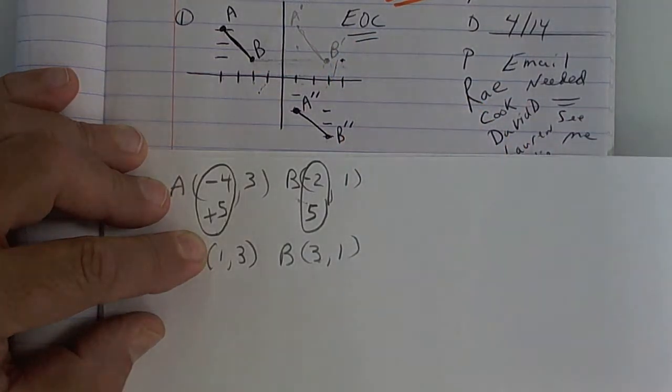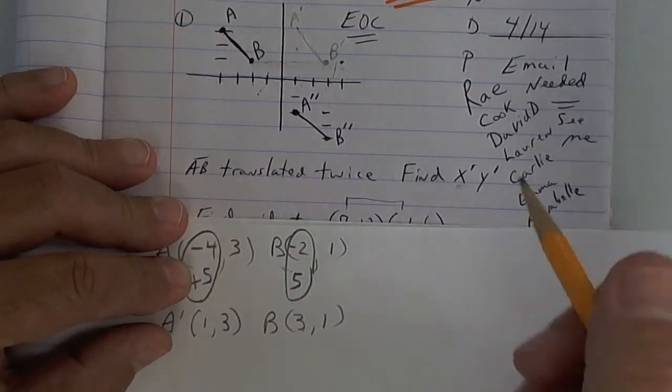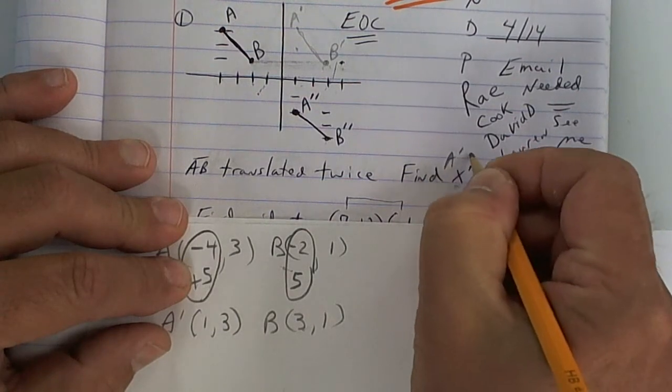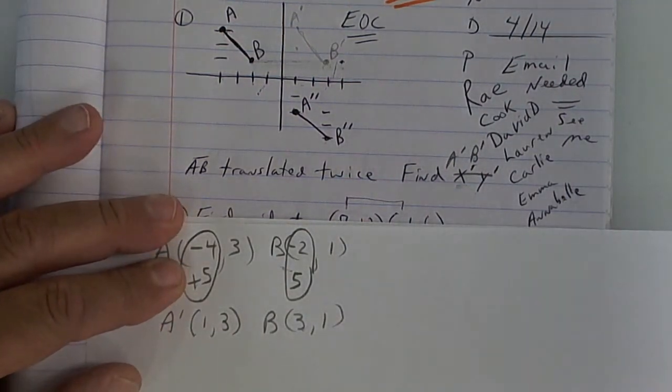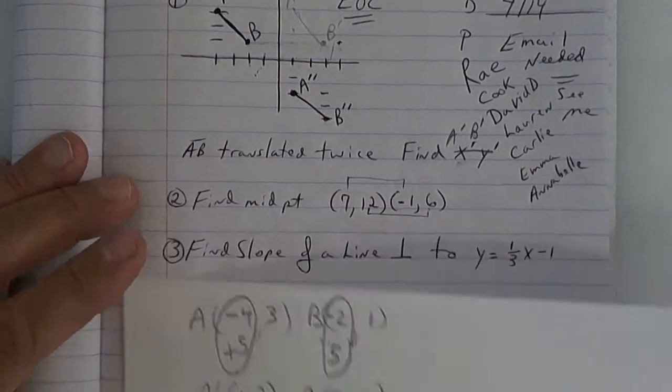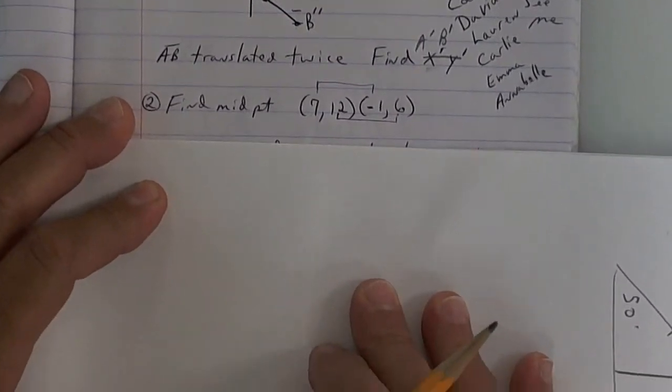And that's all they want is the first move, x prime, y prime. I guess I should change that to A prime, B prime. Is everybody clear on what I'm saying? That was on that EOC practice sheet that Mr. Lee did, or similar to it.